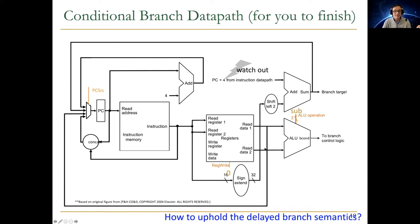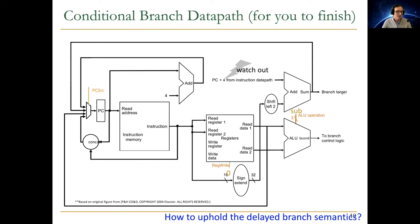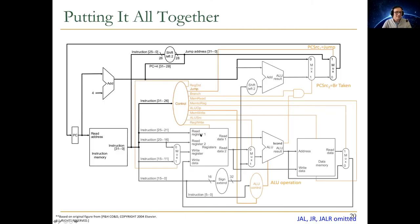We're going to ignore delayed branch semantics for now. MIPS has this artifact where the branch target address gets into the PC not in the current cycle but in the next cycle. This will become clearer when we discuss pipelining. In general, delayed branching is a bad idea, and we'll discuss why when we cover branch handling in pipelined microarchitecture. If you see delayed branch in your book, ignore it.